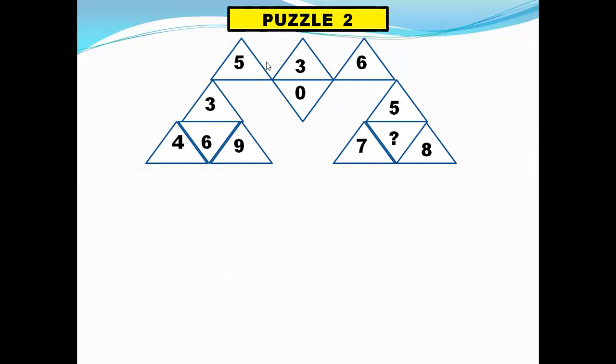So I will show you how. 5 times 6 is 30. So we write 3 in the top triangle and 0 in the bottom triangle.